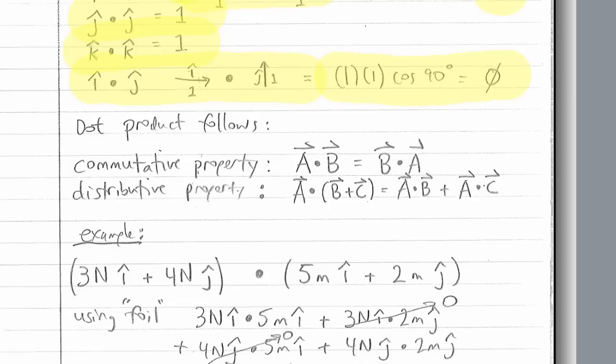The dot product follows the commutative property, A dot B is equal to B dot A. It also follows the distributive property, A dotted on the quantity B plus C, and this is a vector sum, will equal A dotted on B plus the vector A dotted on the vector C. Again, when you're all done with your dot product, you will have only a magnitude, the dot gets rid of that vector quality.